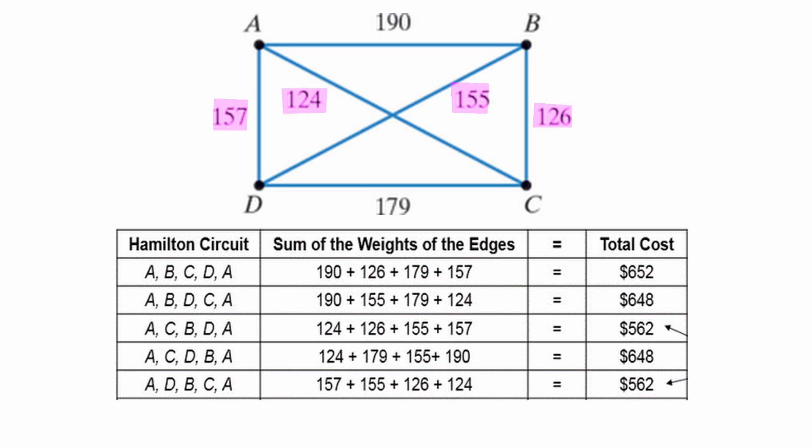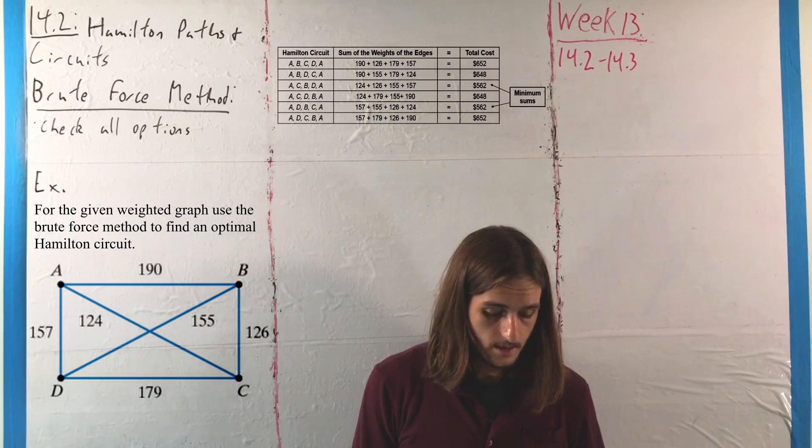And then finally ADCBA for 157, 179, 126, and 190 for a total of $652, with a nice little bookend there.